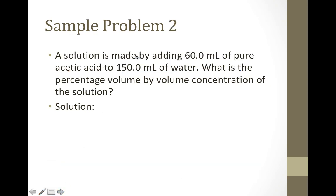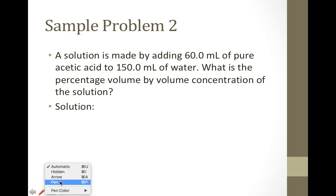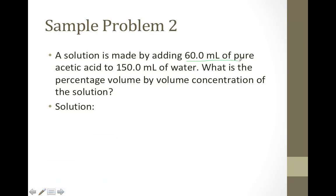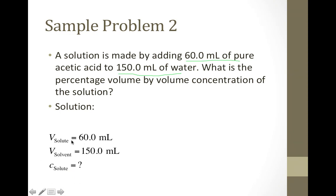Moving on to sample problem 2: a solution is made by adding 60 mL of pure acetic acid to 150 mL of water. What is the percentage volume by volume concentration? This question is worded a little differently. We have 60 mL of pure acetic acid as our solute, added to 150 mL of water as our solvent. So volume of solute = 60 mL, volume of solvent = 150 mL, and we're solving for concentration.